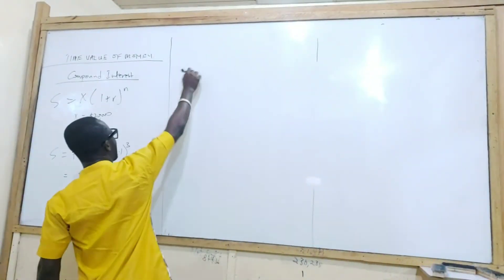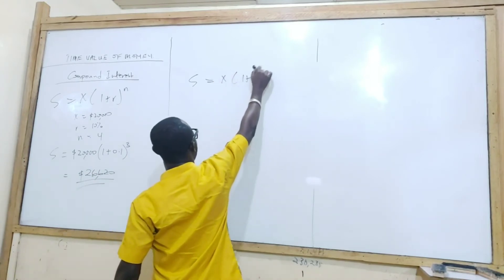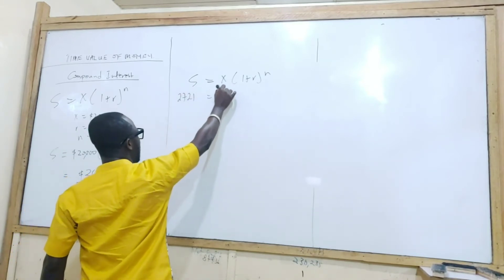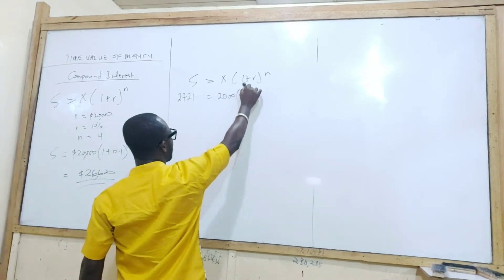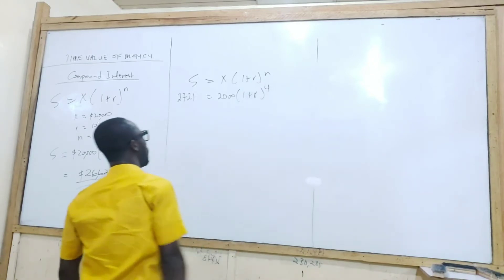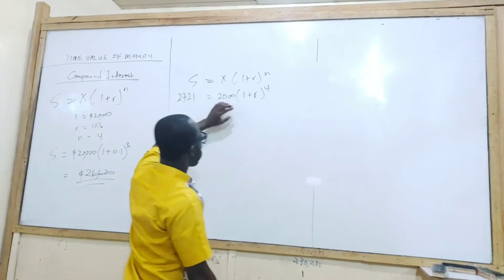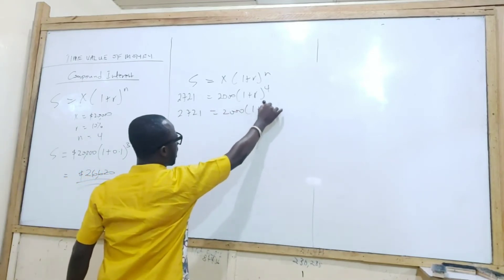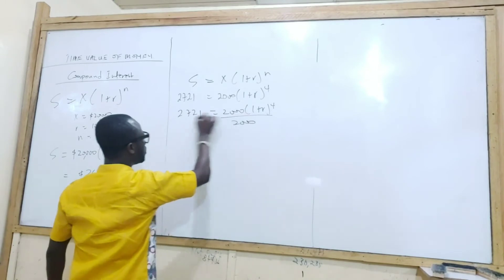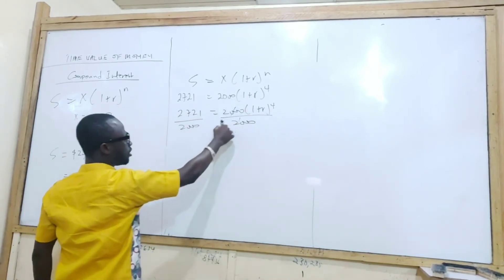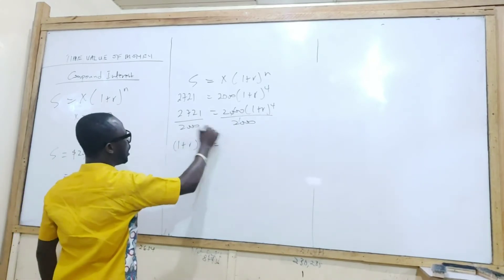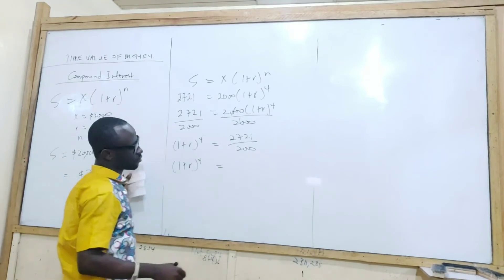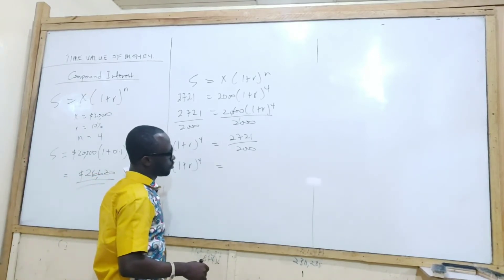So in this scenario, S = X(1 + r)^4. How much are we getting after? $2,721. And how much are we investing? $2,000. $2,000 plus interest rate, that's what we're looking for, exponent four. So since there is an exponent here, whatever is affecting this, we have to divide through. So 2721 = 2000(1 + r)^4. So we divide by 2,000 to get rid of the 2,000 here, so that we have (1 + r)^4. And that will give us 2721 over 2000. What do I have? 1.36.